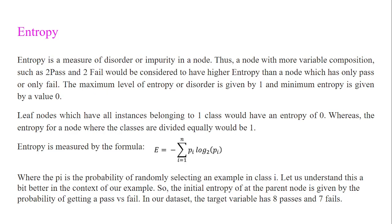Entropy is a measure of disorder or impurity in a node. A node with more variable compositions, such as both pass and fail, would have higher entropy than a node which has only pass or fail. A leaf node where all instances belong to one class would have entropy zero — there is no impurity. Where the classes are divided equally, the entropy will be one.